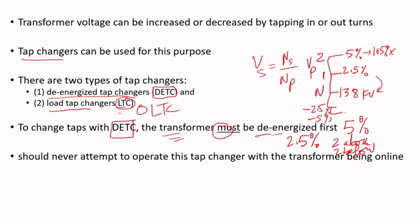You should never attempt to operate a de-energized tap changer while the transformer is energized. If the transformer is under voltage, you should not operate this tap changer, because you will damage the tap changer, could cause damage to the transformer, and personnel could be severely hurt. It's dangerous — you don't want to do that.